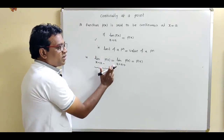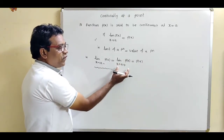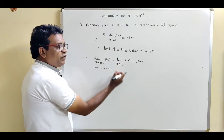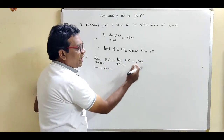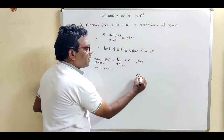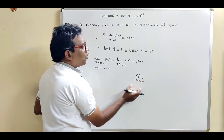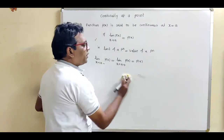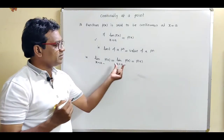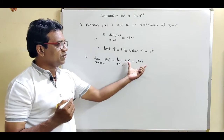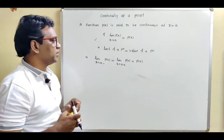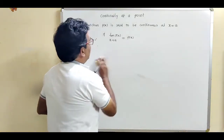The notation for limit from right is: x tends to a plus, meaning it is the limit from the right. This equals f(a), which is called the value of the function at the given point a. So remember this definition: if the limit from left equals the limit from right, and both equal the value of the function, then the function is said to be continuous.